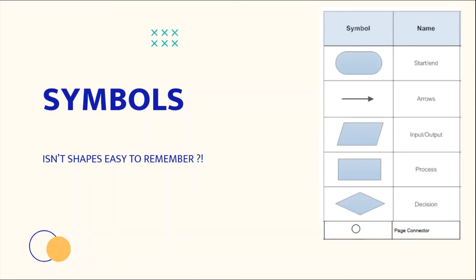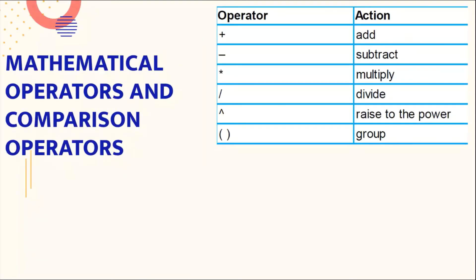A diamond indicates a decision. A circle represents a page connector. Now let us see some mathematical operators and comparison operators which are used in flowcharts.